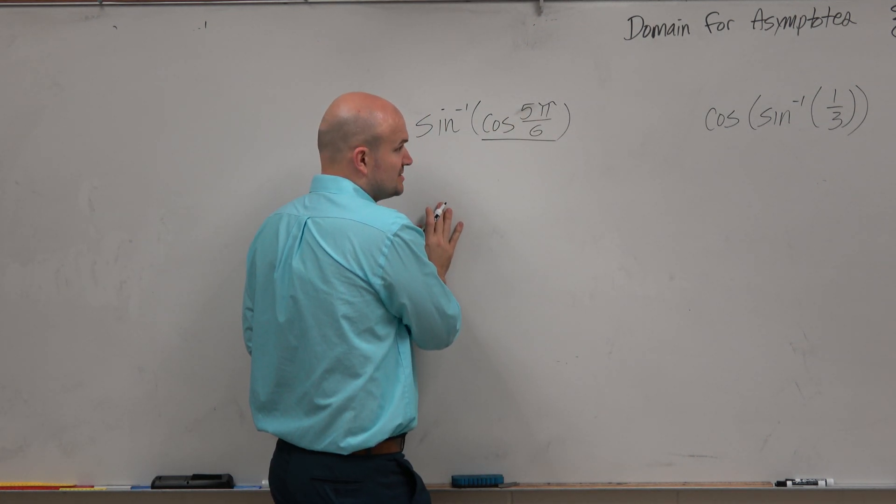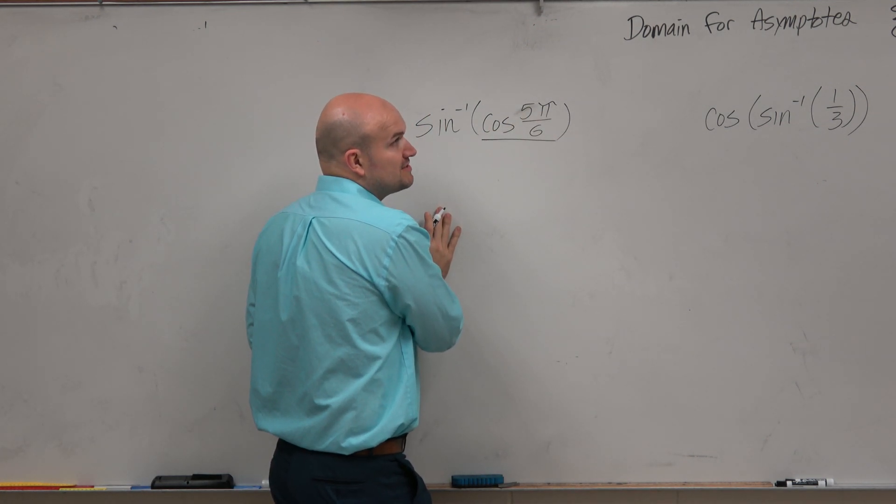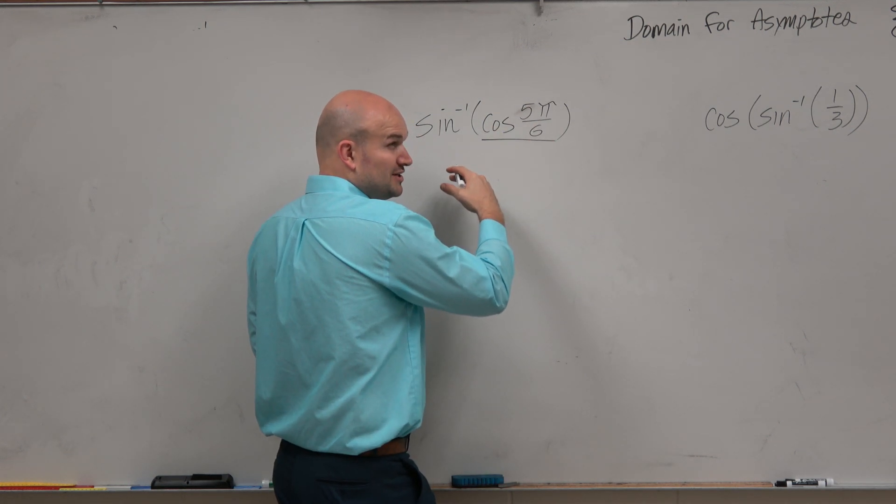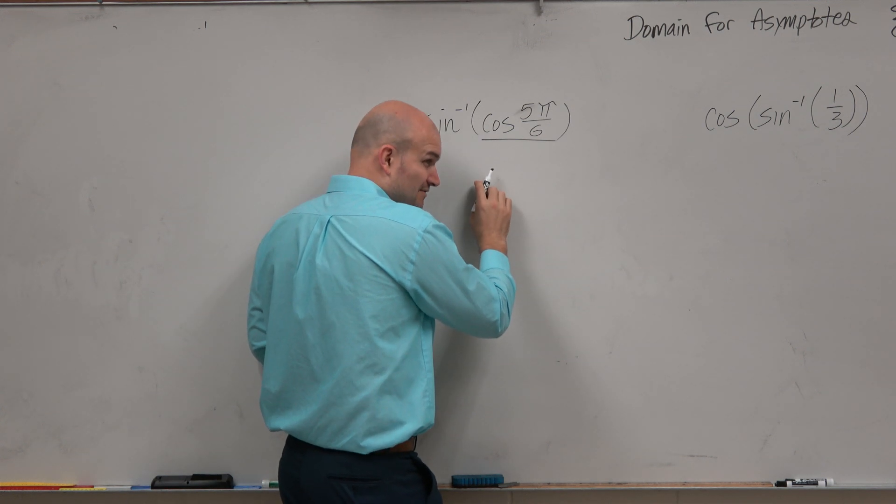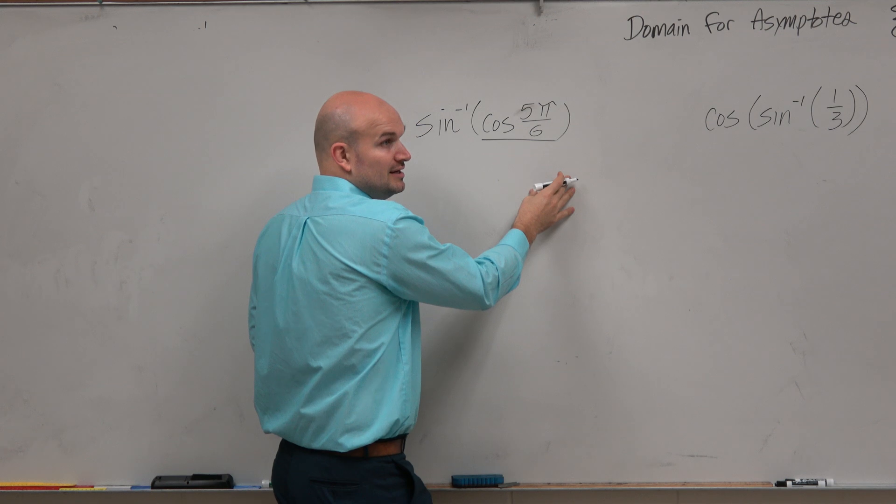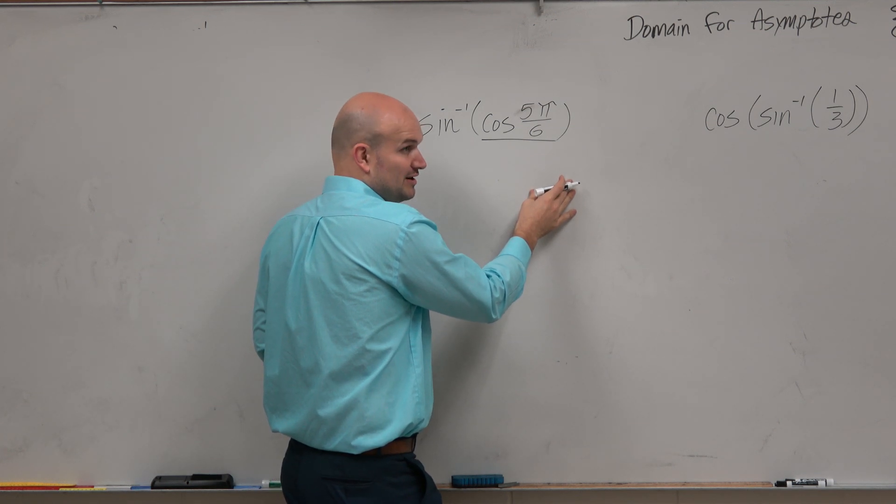So we just say cosine of 5π over 6, and we think, all right, 5π over 6, we know that is in which quadrant? Second quadrant. It has a reference angle of π over 6. The cosine of π over 6 in the first quadrant is square root of 3 over 2.